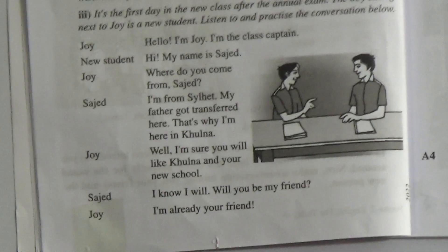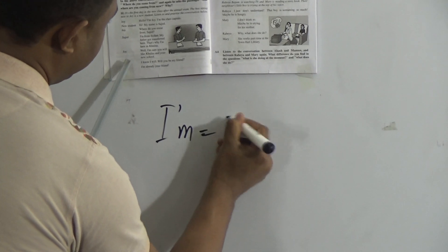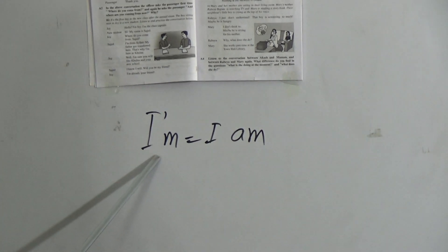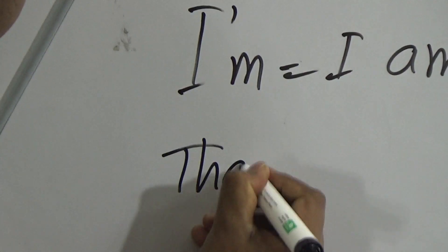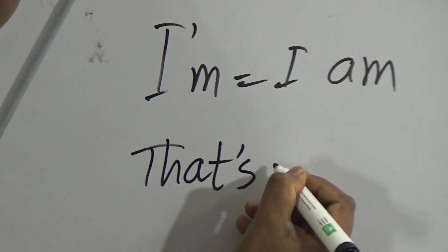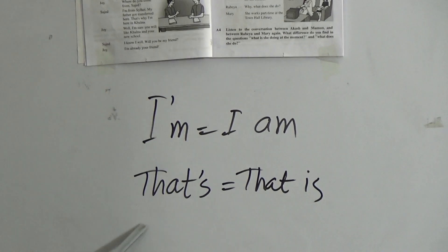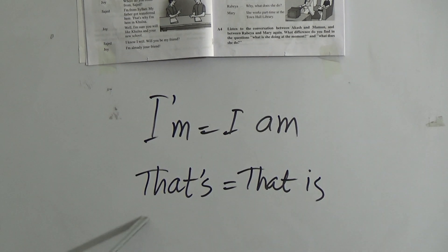The lesson has some abbreviations. 'I'm' means 'I am.' Its pronunciation would be 'I'm,' not 'I am.' And another one is 'that's.' That means 'that is.' But at the time of pronunciation, you have to utter it like 'that's.' It would be 'that's.'